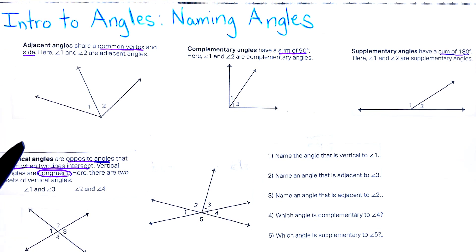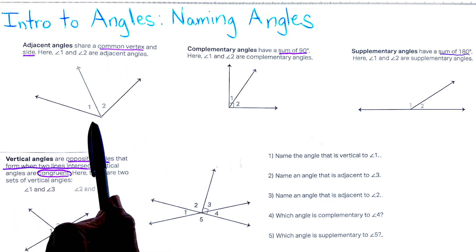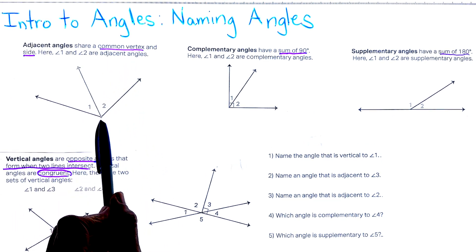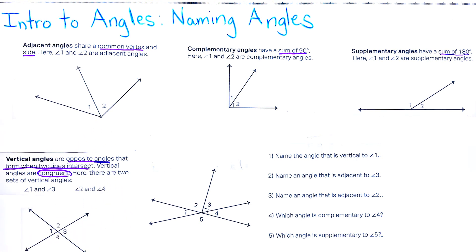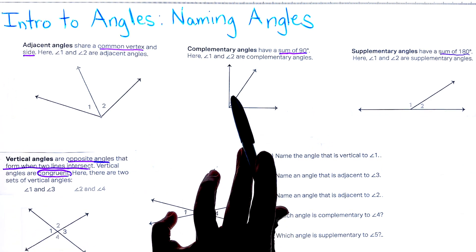They share a common vertex right here and they share a common side, so we can see that angle one and angle two are what we call adjacent angles. I like to think of them as neighbors.